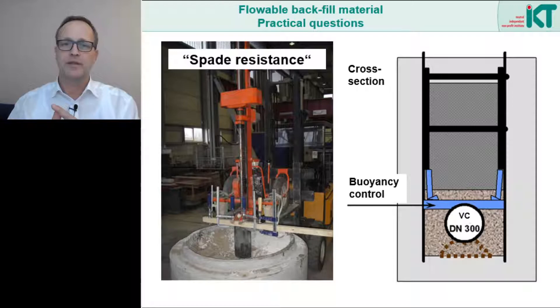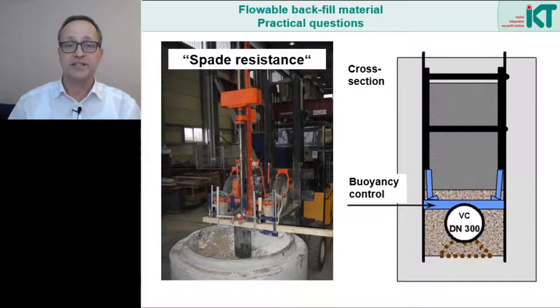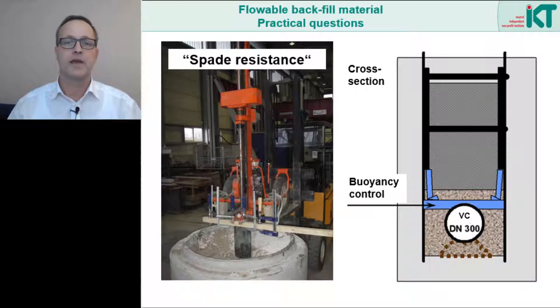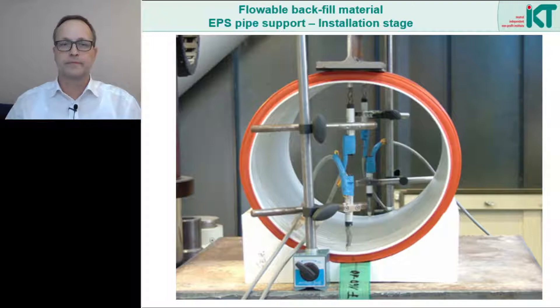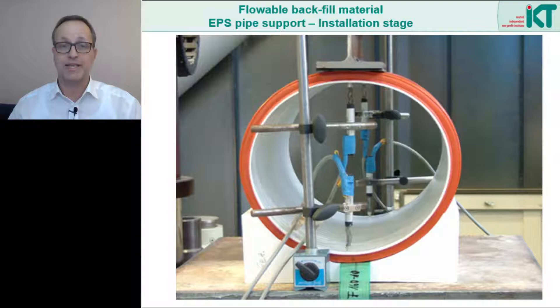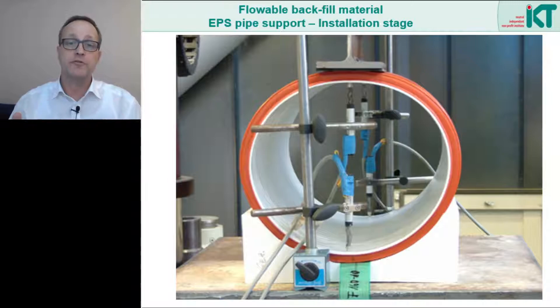For construction practice, two questions are particularly important. Number one: the possibility of later re-excavation — that means the ability to remove the material using a simple spade, for instance. In the picture you can see a test to determine the so-called spade resistance of the material. Here, in addition to the binder, the grain size distribution plays a significant role. Number two: the buoyancy control, which is crucial during installation. The construction company must know how to control the buoyancy and take this into account in the construction process. It is important to find suitable elements to support the pipe during the filling process. Here we see an example for the support of a smaller pipe with a diameter of 300 mm. The plastic pipe lies on a bedding cushion made of EPS — expanded polystyrene. In the test, pressure measuring foils were used to check whether the pipe lies evenly in the bedding cushion and whether this remains so even under increasing vertical load.